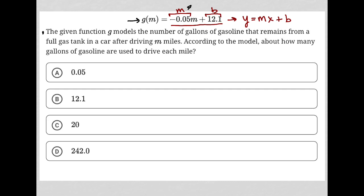Well, that would be our slope. That would be this negative 0.05 in front of the m. The best way to really describe this is if m were 0, if their car had driven 0 miles, that would make this entire term here equal to 0. And our answer for g of m, the amount of gallons of gasoline the car has, would be 12.1.